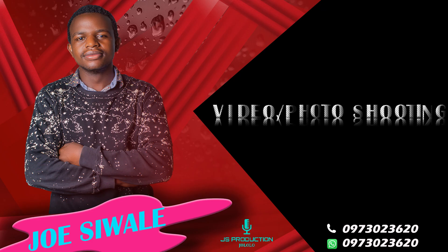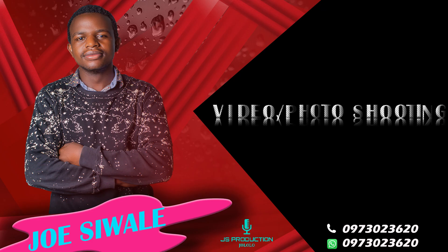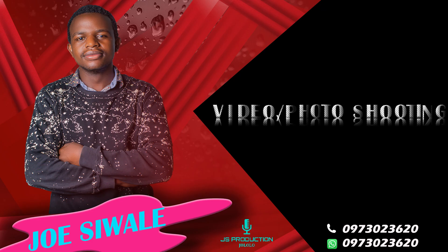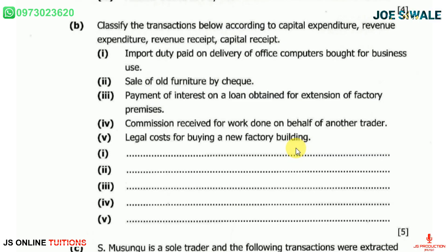Question 1b reads: classify the transactions below according to capital expenditure, revenue expenditure, revenue receipt, and capital receipt. But before we go into details, we need to understand the definitions for these transactions.